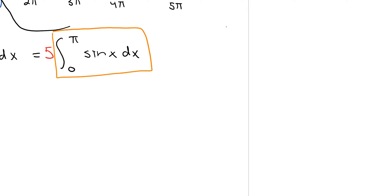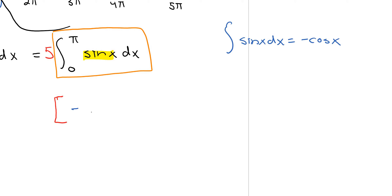I'm able to set up my integral because I was able to draw the graph. Now I just need to solve this integral and multiply by 5 to get my answer. If you have your reference sheets, you should remember that the integral of sine x dx is going to be negative cos x. So the antiderivative is negative cos x, evaluated from 0 to π, then multiplied by 5.